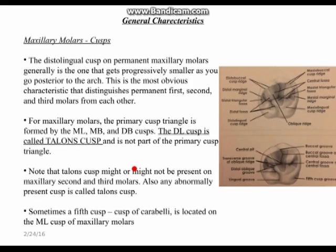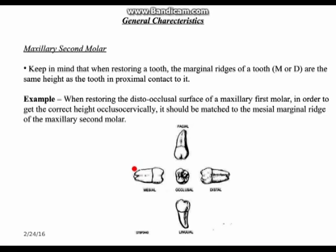Regarding the maxillary second molar: when restoring a tooth, the marginal ridges — mesial or distal — should be at the same height as the adjacent tooth's marginal ridge. For example, when restoring the distal occlusal surface of the maxillary first molar, the height of the distal marginal ridge should match the mesial marginal ridge of the maxillary second molar, since they are in proximal contact.